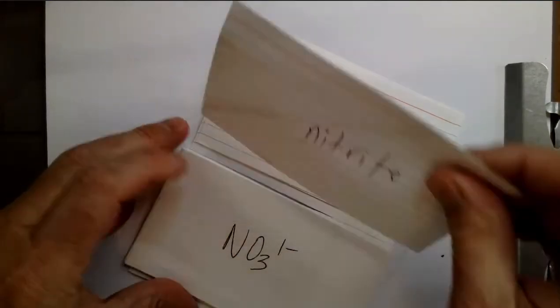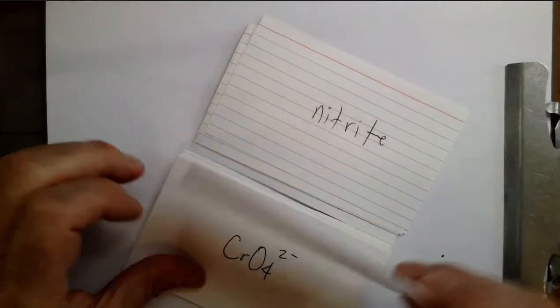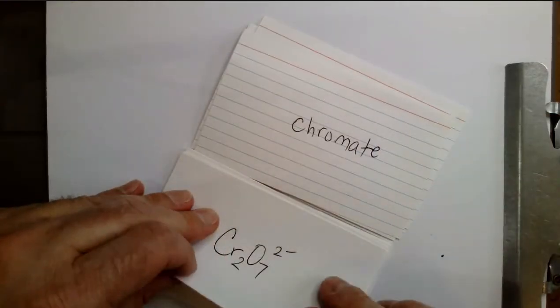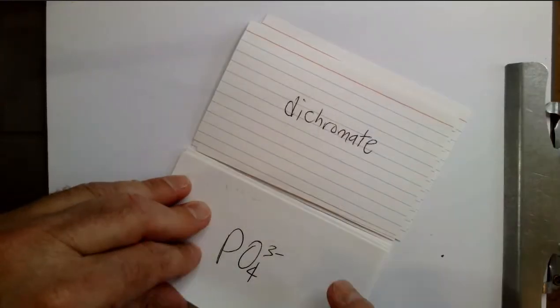NO2 1- nitrite. NO3 1- nitrate. CRO4 2- chromate. CR2O7 2- dichromate.